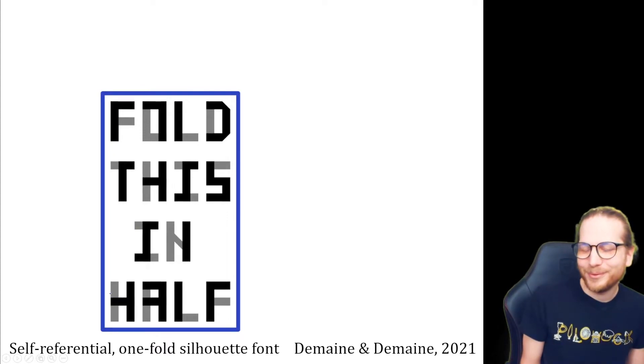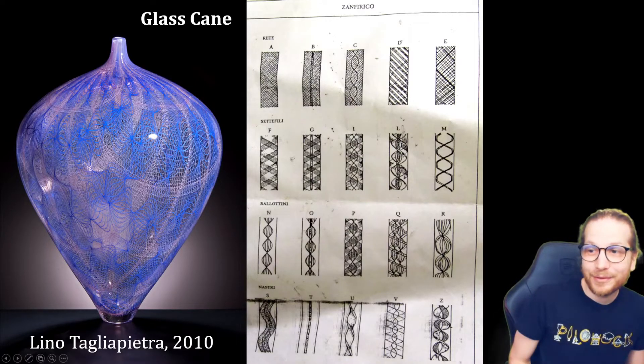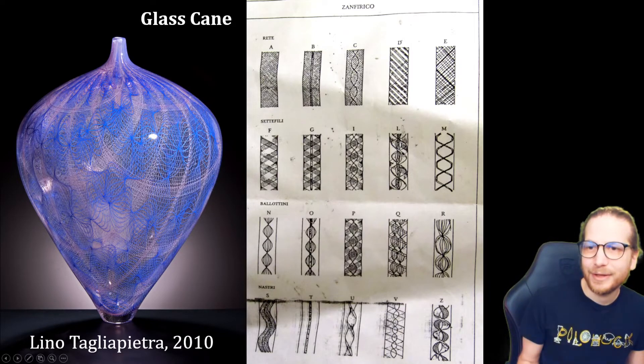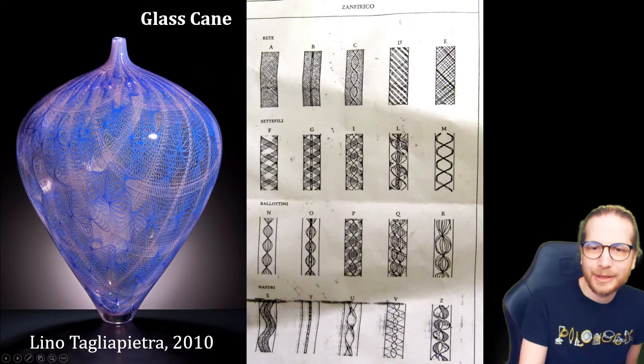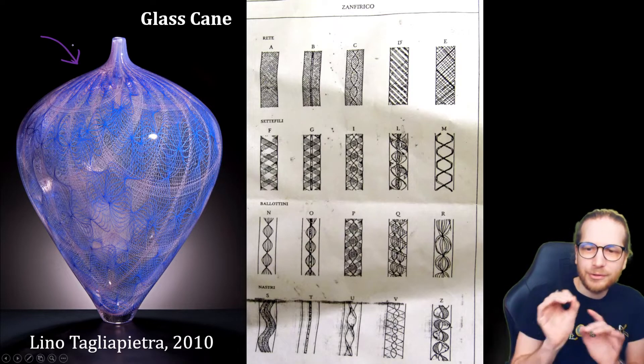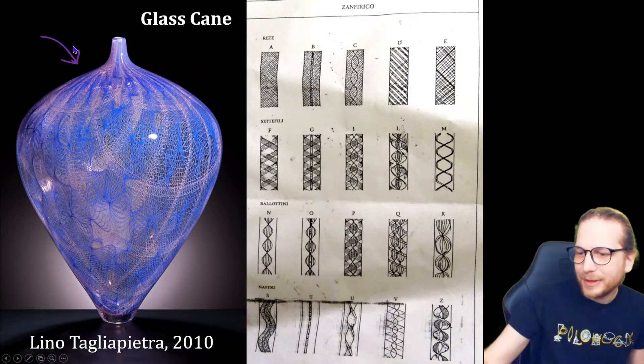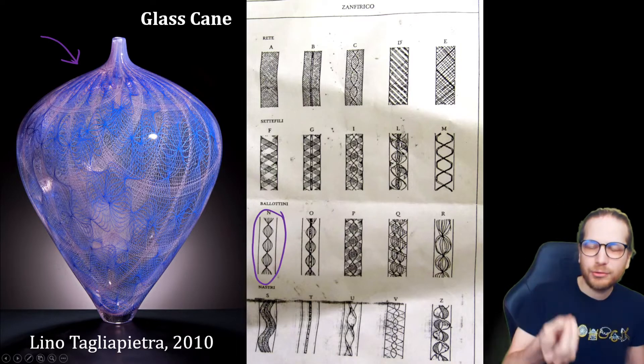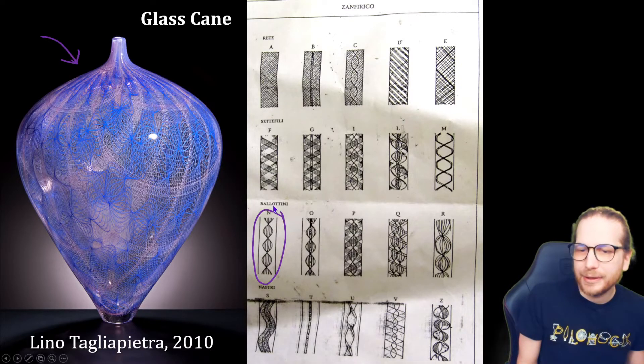So lots of fun things you can do with this technique. Next example of a font is inspired by Glass Cane. So this is a centuries-old technique in glassblowing. My dad and I are also glassblowers. And if you've ever seen glasswork like this with lots of intricate little lines, this is an example by Lino and Taglia Pietra, then it's made out of glass cane,